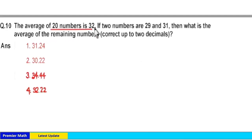The average of 20 numbers is 32. If 2 numbers are 29 and 31, then what is the average of remaining numbers?